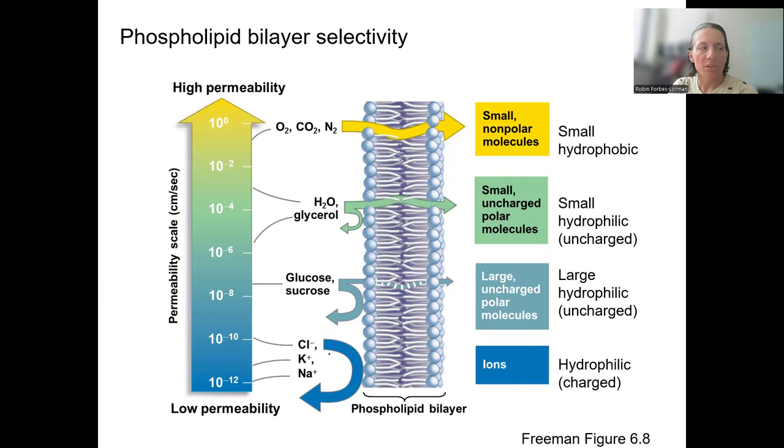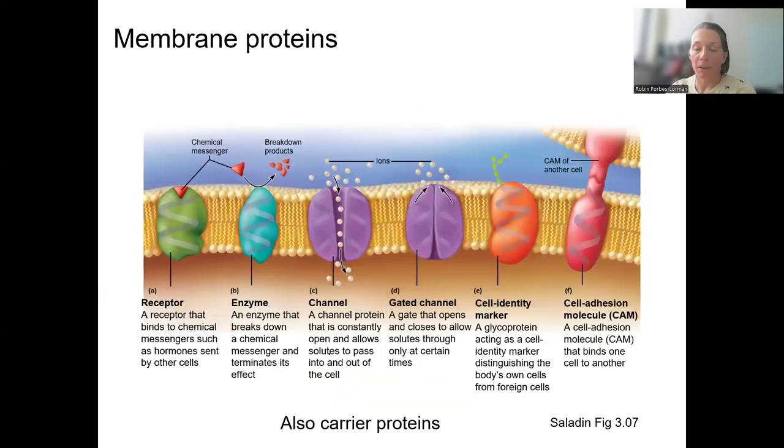You've seen these membrane proteins before. Here they are with each component labeled. I want to mostly focus on the ones we're talking about right now, our channels. This is proteins that create a hydrophilic pocket for the ions to travel through so that they can cross across that plasma membrane.